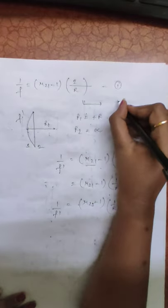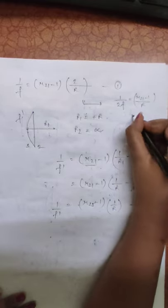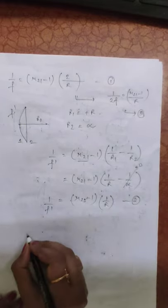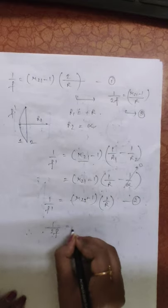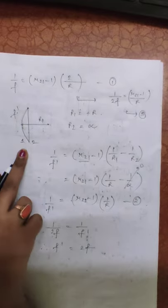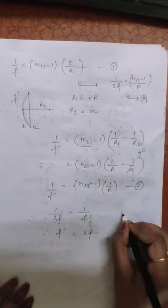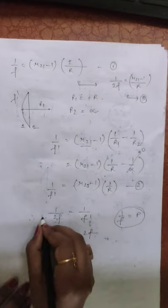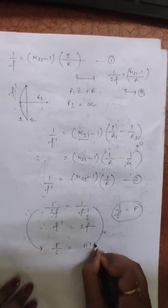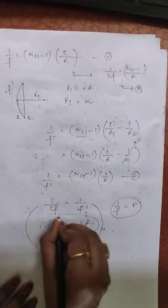From equation 1 we can write 1/(2f) = (μ₂₁ - 1)/r, which is equation number 3. Comparing equation 3 and equation 2, we get 1/(2f) = 1/f dash, therefore f dash = 2f. The focal length of the planoconvex half is twice that of the original equiconvex lens. Since power = 1/f, we get P dash = P/2. These two results — f dash = 2f and P dash = P/2 — are our required answers.